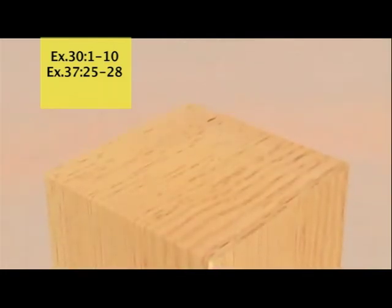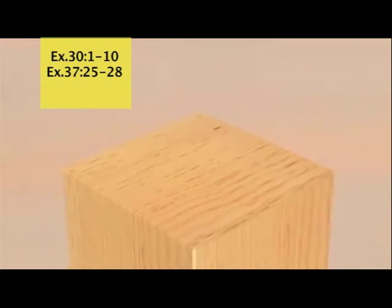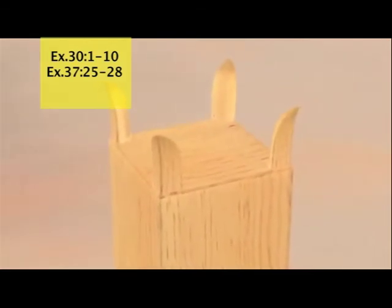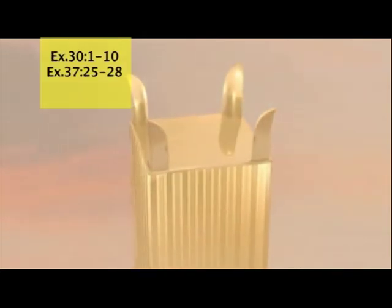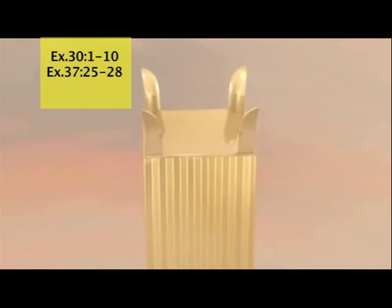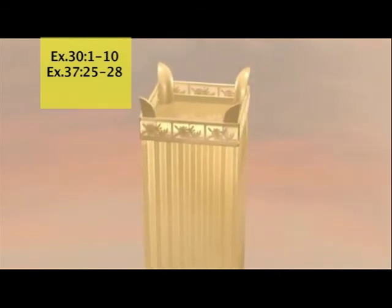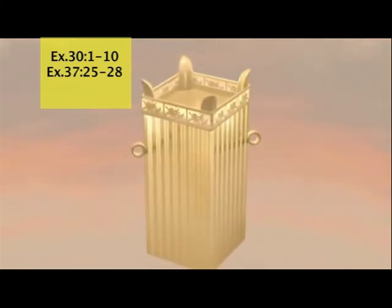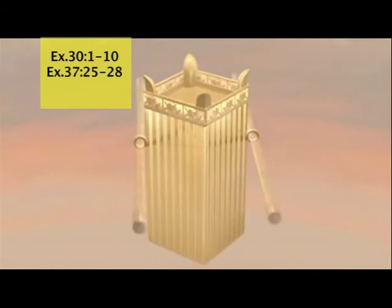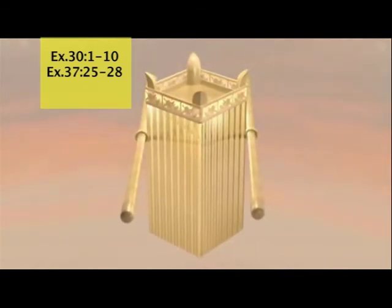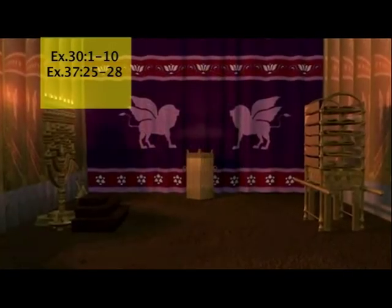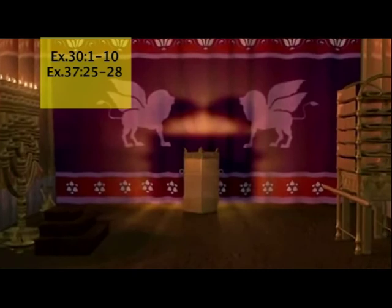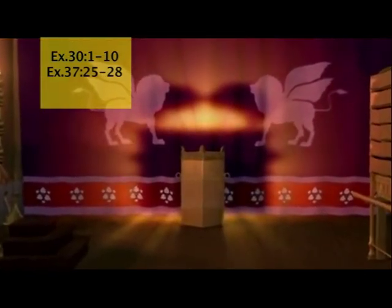Make a small altar out of acacia wood for burning incense. It must be 18 inches square and 3 feet high, with horns at the corners carved from the same piece of wood as the altar. Overlay the top, sides, and horns of the altar with pure gold, and run a gold molding around the entire altar. Beneath the molding, on opposite sides, attach two gold rings to support the carrying poles, which are to be made of acacia wood and overlaid with gold. Place the incense altar just outside the inner curtain, opposite the Ark's cover — the place of atonement — that rests on the Ark of the Covenant. I will meet with you there.